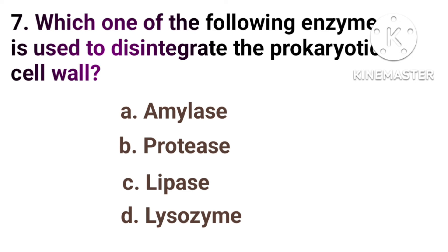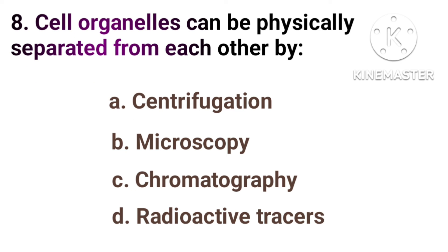Which one of the following enzymes is used to disintegrate the prokaryotic cell wall? Option A, amylase. Option B, protease. Option C, lipase. Option D, lysozyme. The correct answer is Option D, lysozyme. Cell organelles can be physically separated from each other by: Option A, centrifugation. Option B, microscopy. Option C, chromatography. Option D, radioactive tracer. The correct answer is Option A, centrifugation.